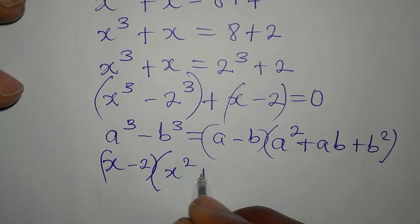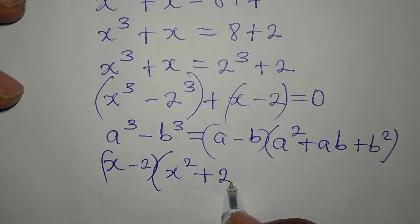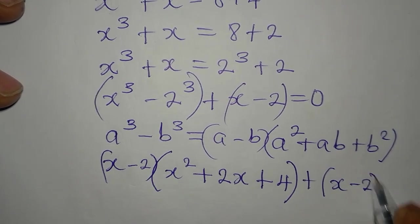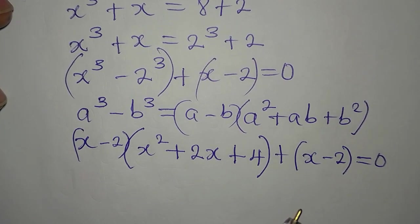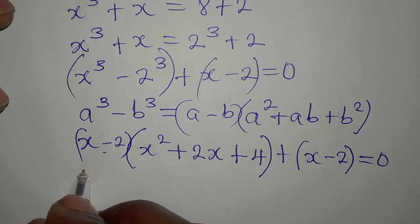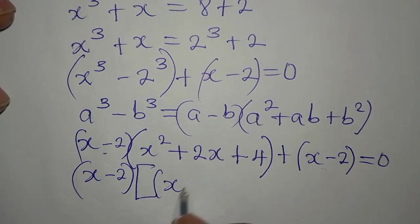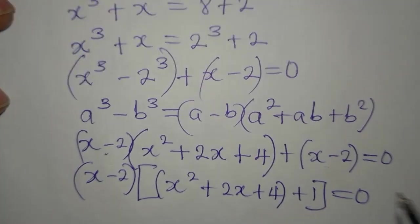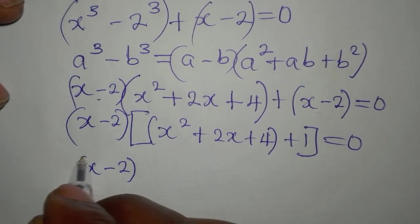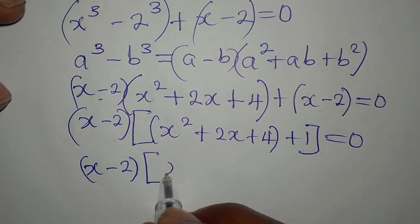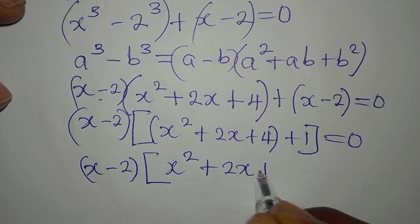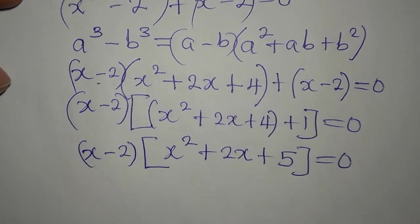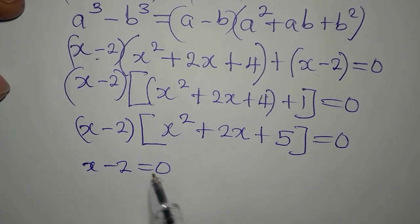Expanding: a squared is x squared, ab is x times 2 which is 2x, and b squared is 4. Then we also have plus x minus 2, equated to 0. Since x minus 2 is a common factor, we factor it out, giving x minus 2 times the quantity x squared plus 2x plus 4 plus 1, which simplifies to x minus 2 times x squared plus 2x plus 5 equals 0.